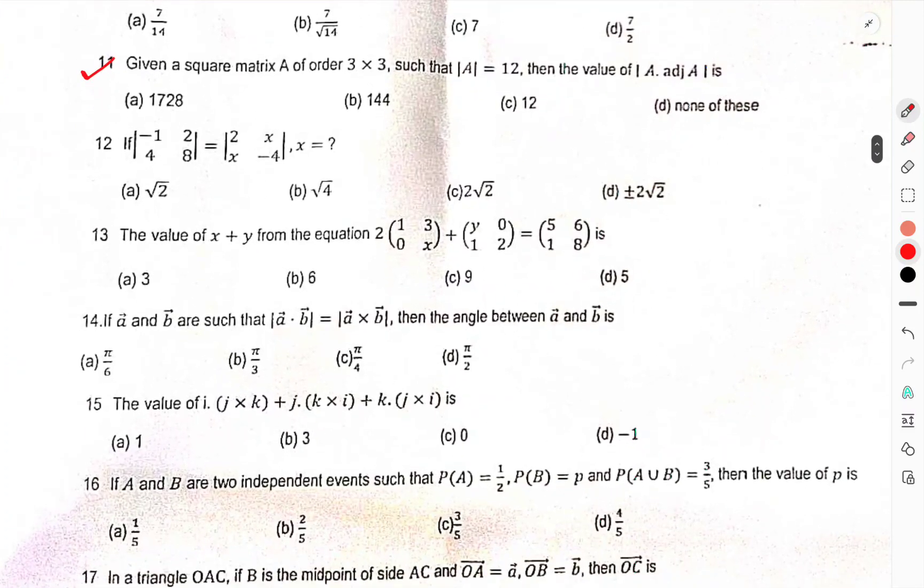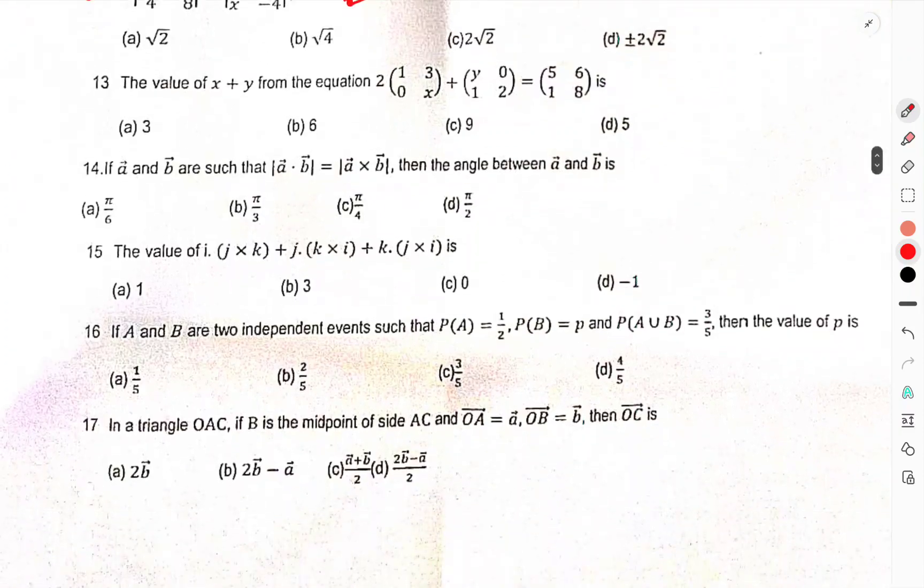FX is equal to 0 to X Y sin Y DY if X first differential equation of function X is. The scalar projection of vector 3I minus J minus 2K on the vector I plus 2J cap minus 3K cap is. Question number 11, our given square matrix A in order of 3 by 3, the magnitude of A is 12 and the value of magnitude of A addition A is. Question number 12, if this is, then the value of you have to find the value of X.